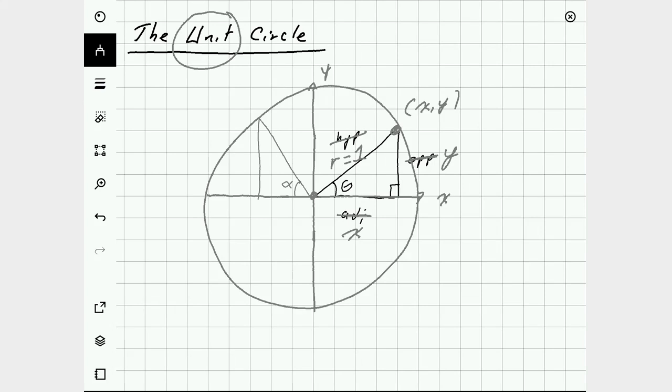And knowing that in a reference angle, the point here, in this case I drew a triangle in the second quadrant, the point here has an x-coordinate which is negative. So the adjacent side will have a length of the opposite of x.